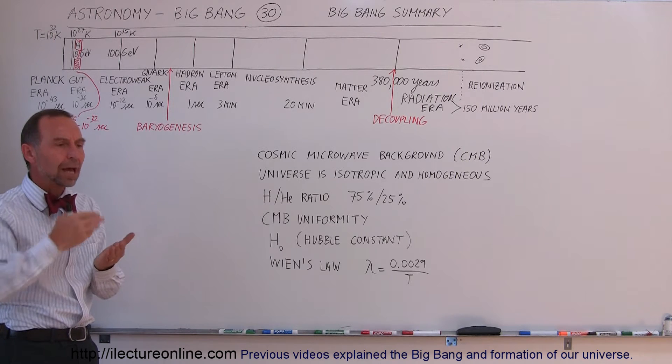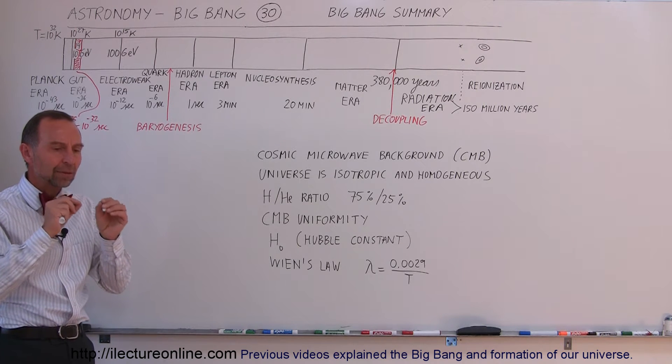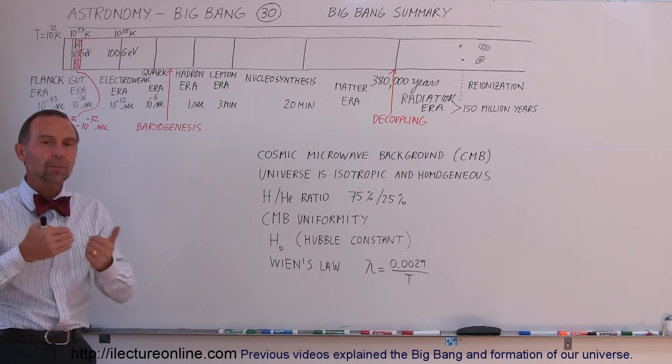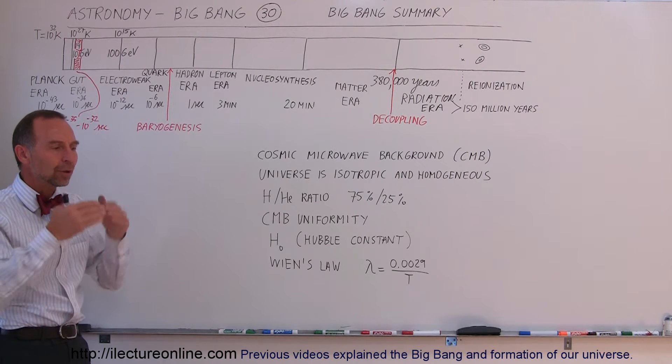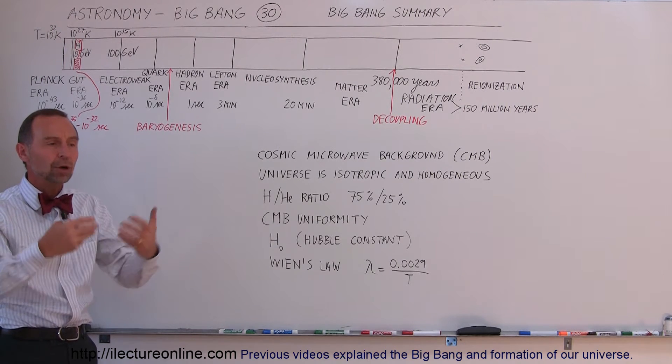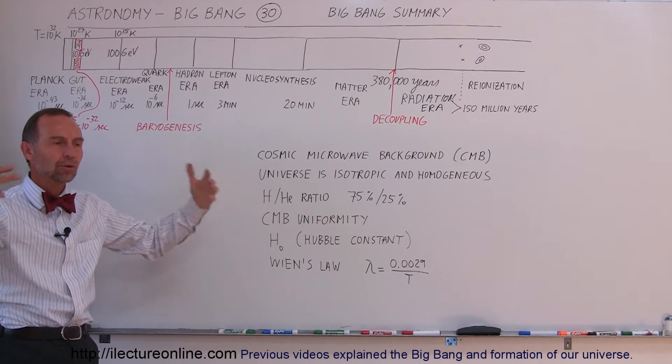And as the Universe cooled down, we realized that the temperature began to the point where the energy contained in radiation could no longer make the big particles, and the small particles were formed. And then when the Universe continued to cool down, no more particles could be formed, and all the matter that exists in the Universe would have then existed.